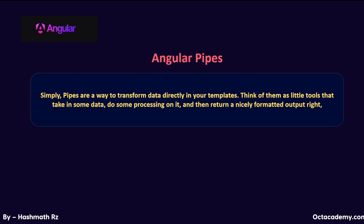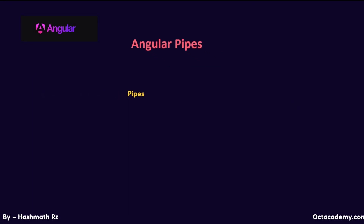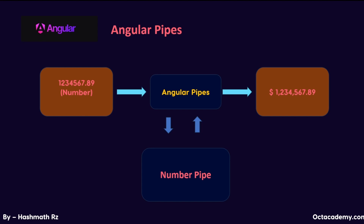First things first — what are Angular pipes? Simply put, pipes are a way to transform data directly in your templates. Think of them as little tools that take in some data, do some processing on it, and return a nicely formatted output. For example, you might have a number you want to display as a currency, or a long string you need to trim. Pipes allow you to do these kinds of transformations in a super simple and readable way, right inside your Angular templates or component HTML file.